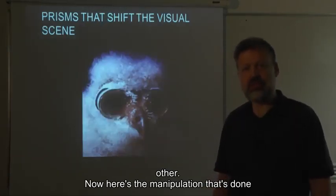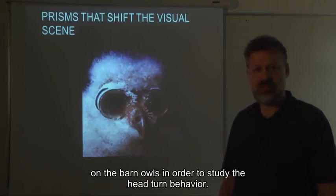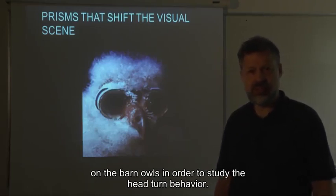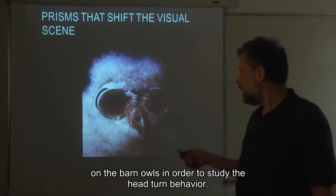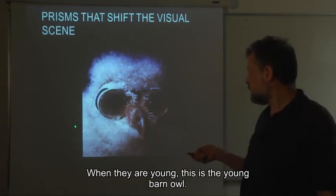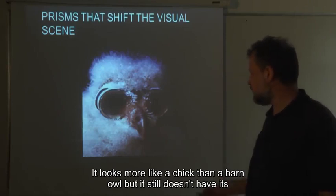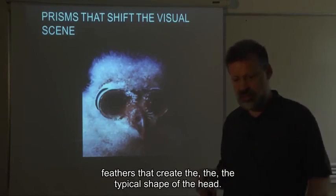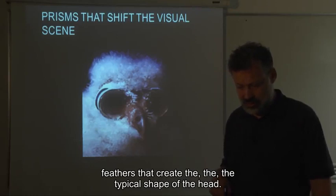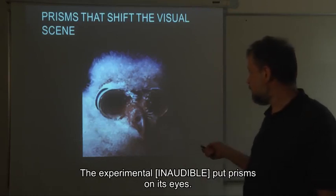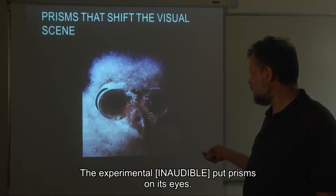Here is the manipulation done on barn owls in order to study head turn behavior. When they are young — this is a young barn owl — it looks more like a chick than a barn owl and still doesn't have the feathers that create the typical shape of the head. The experimenter, Eric Knudsen's group, put prisms on its eyes. These goggles are prisms that shift the visual field by about 20 degrees to the side.